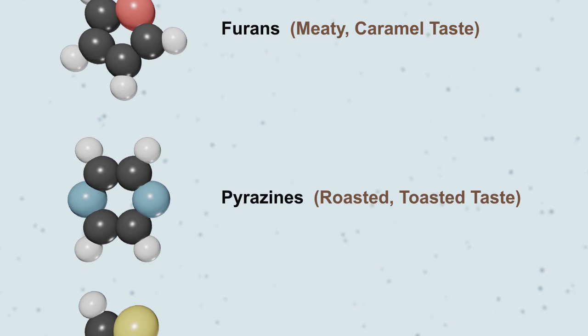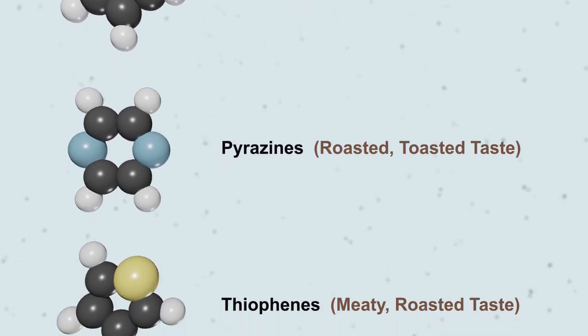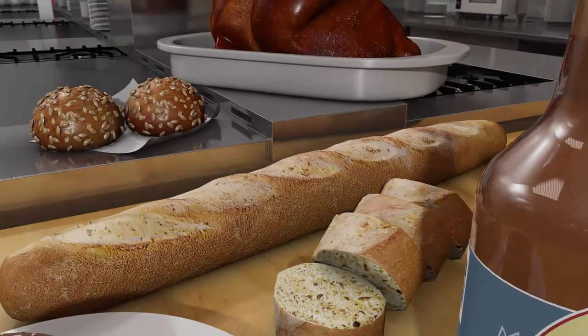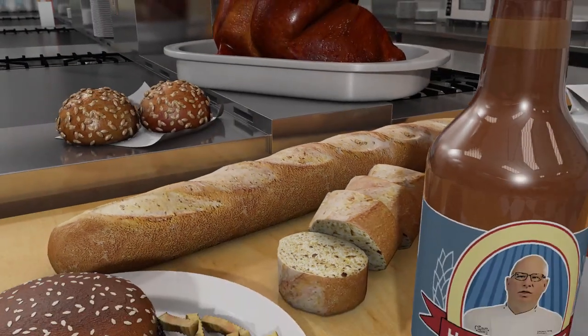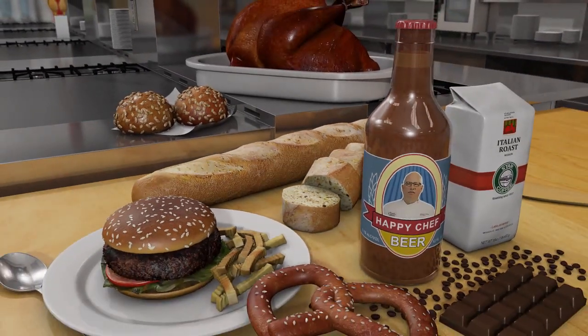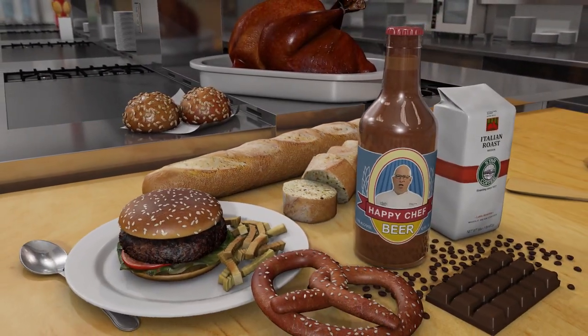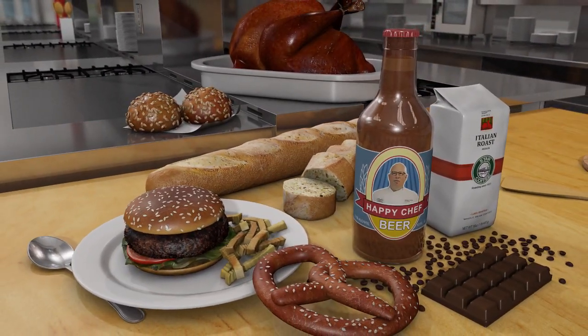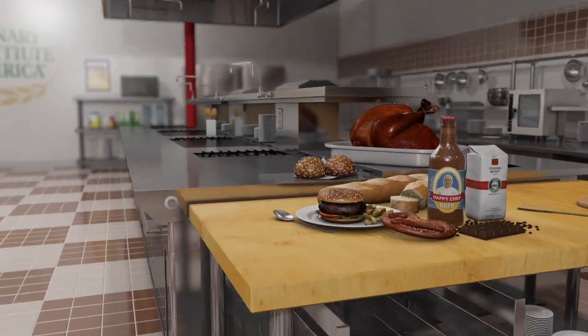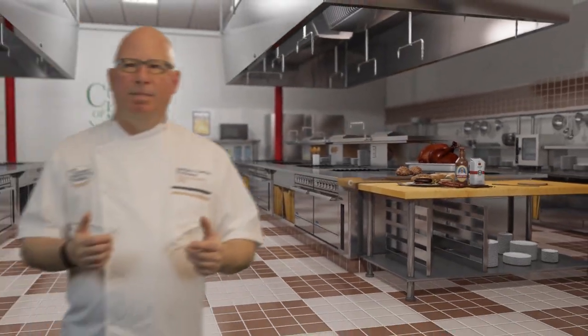Maillard browning is responsible for the color and flavor of toasted and roasted foods such as bread crust, brown crust on roasted meats, coffee, and chocolate. Maillard browning is promoted by alkaline conditions, and an alkali dip is what leads to the extreme browning on the surface of pretzels.